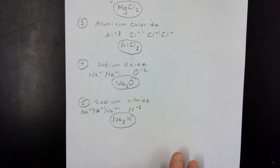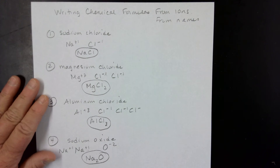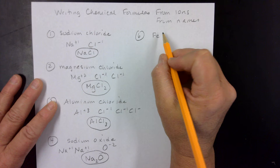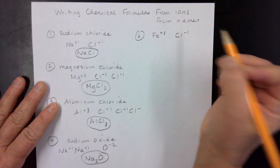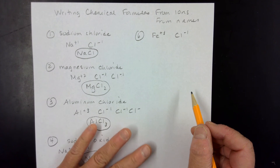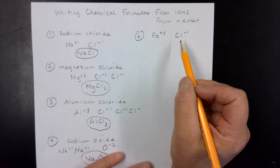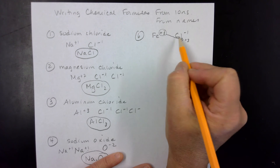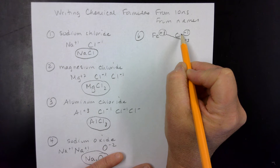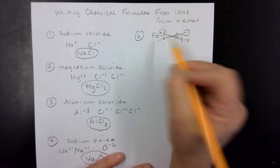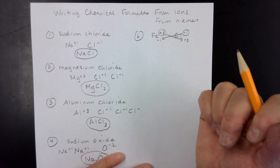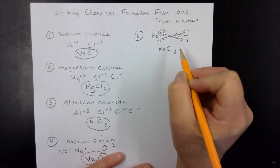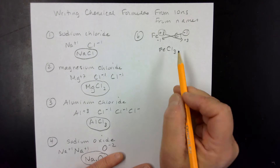Now let's look at a faster way to do these. This is example six, and I'm going to start with the ions rather than the name. We have iron plus three and chloride minus one. A quick method is the crisscross method: take the charge on one ion and it becomes the subscript on the other. So chloride gets a subscript of three, and the charge on chloride — one — becomes the subscript on iron. Drop all charges, and this becomes FeCl₃.